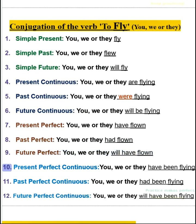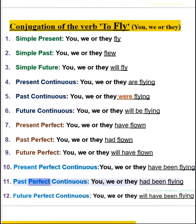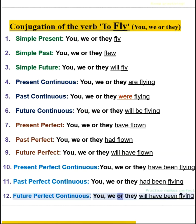10. Present perfect continuous — you, we, or they have been flying. 11. Past perfect continuous — you, we, or they had been flying. 12. Future perfect continuous — you, we, or they will have been flying.